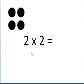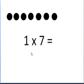Here we have 2 groups of 2, and that equals 4. And 1 times any number is the same number — so we're adding 1 group of 7, and 1 group of 7 is 7.